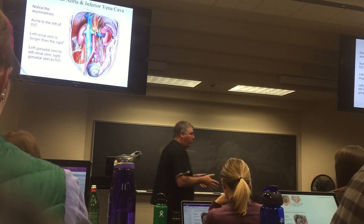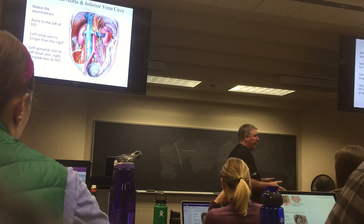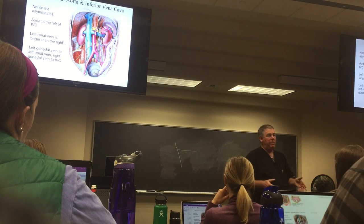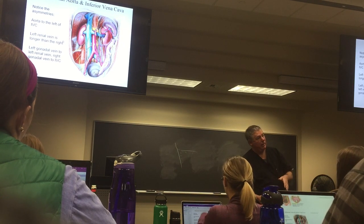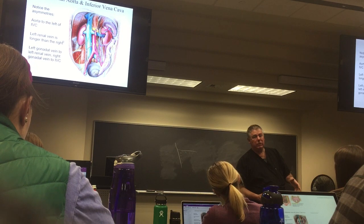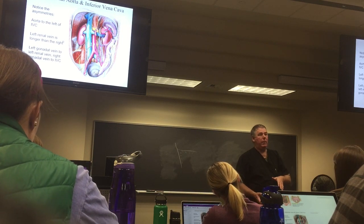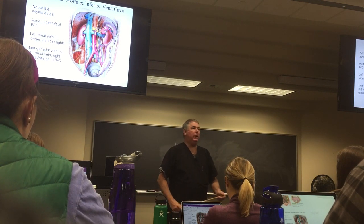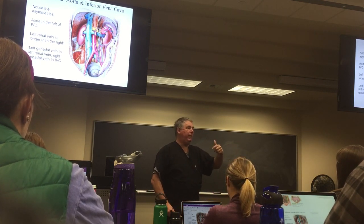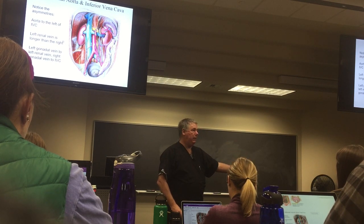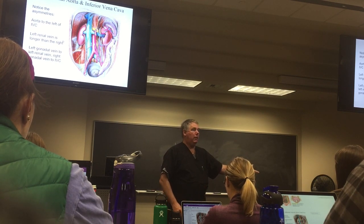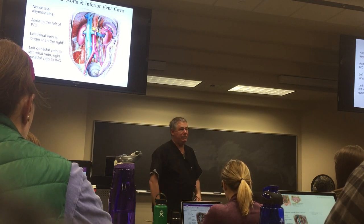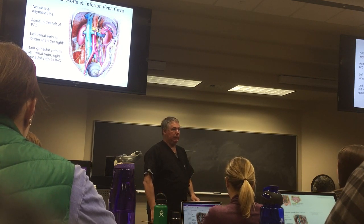If you have a woman in the third trimester of pregnancy, you're going to put her on her side. You never put her on the right side, because the uterus will occlude the inferior vena cava, which decreases blood flow leaving the placenta and the baby will die. You always put a pregnant woman on her left side — always.